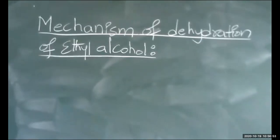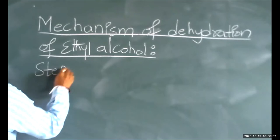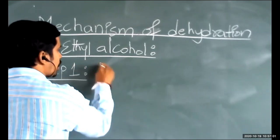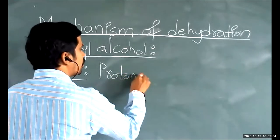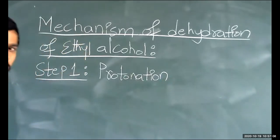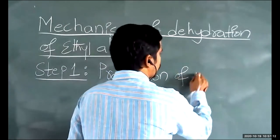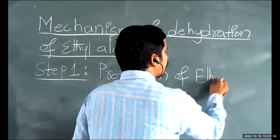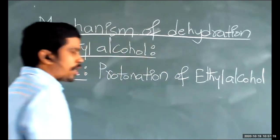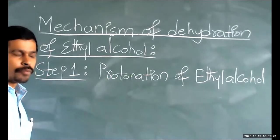The mechanism of dehydration of ethyl alcohol has three steps. Step one is protonation. Protonation means addition of a proton — specifically, the protonation of ethyl alcohol.